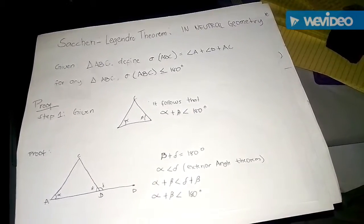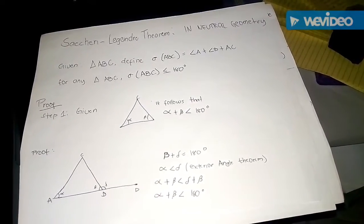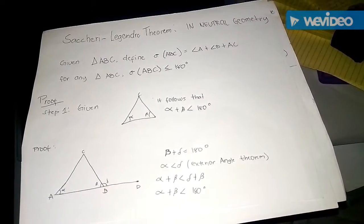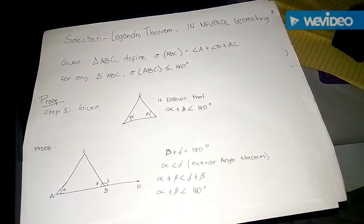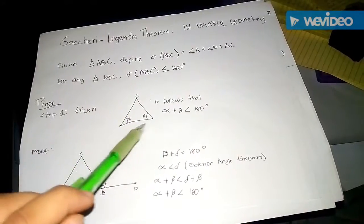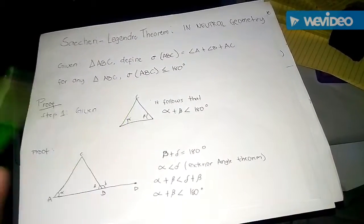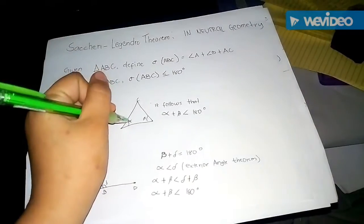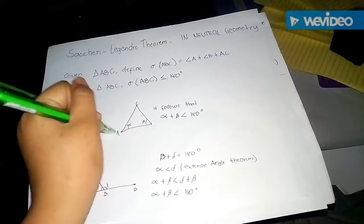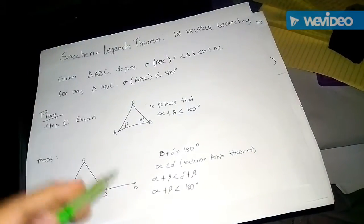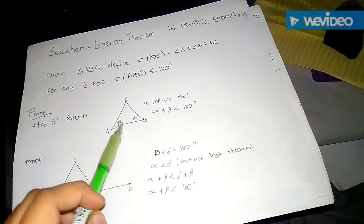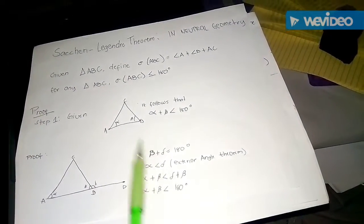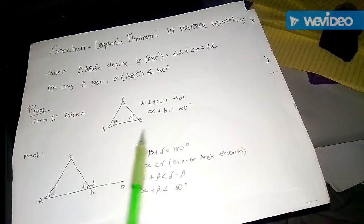For simplicity, first we will make the following definition. Given a triangle ABC, we are going to define the angle sum — we'll call that σ(ABC) — to be the sum of the angles A, B, and C in this triangle.